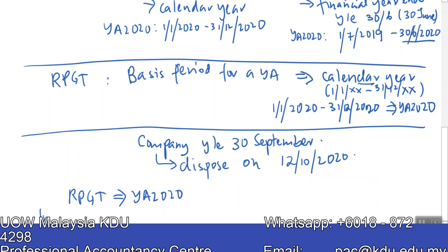For example, say a company with a 30th September year end disposes of real property on 12th October 2020. For RPGT purposes, this will be YA 2020 because RPGT is based on the calendar year. But for income tax computation with a 30th September year end, 12th October 2020 would constitute YA 2021. You have to be very careful with this because in the final exam, if you write the wrong YA, you will generally lose marks.